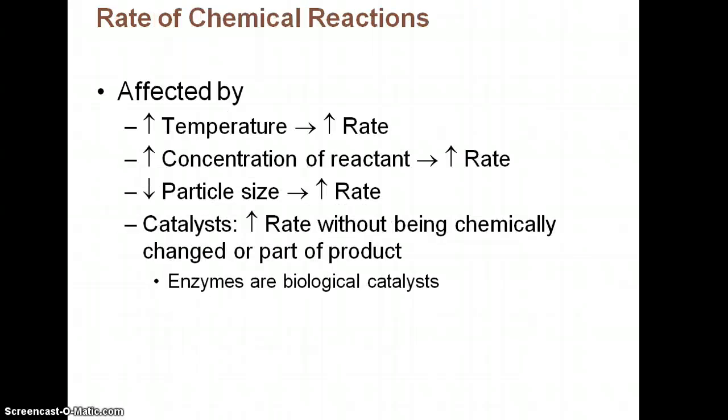Rate of chemical reactions — this you absolutely remember from chemistry. If you increase the temperature, it will increase the rate of the reaction; decrease the temperature decreases it. If you increase the concentration of the reactant, it will increase the rate. Decreasing the particle size will also increase the rate. Another way to increase the rate is by adding a catalyst — they increase the rate of reaction without being changed or becoming part of the product. In biology, we talk about enzymes: enzymes are proteins that are biological catalysts. They speed up the rate of reaction by lowering the amount of energy required, and we'll talk more about that with biomolecules.